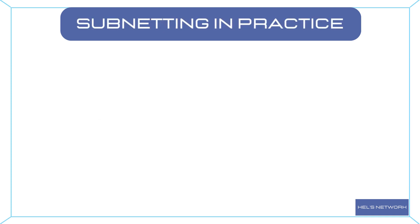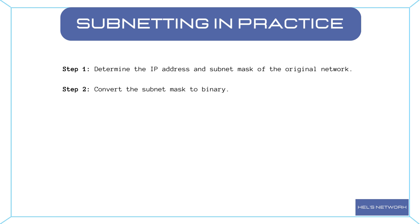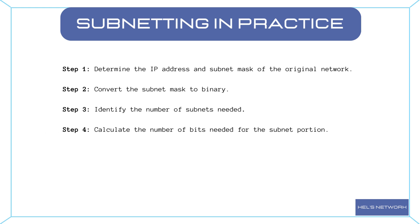Let's get hands-on with subnetting. To calculate subnets, follow these steps. Step 1: Determine the IP address and subnet mask of the original network. Step 2: Convert the subnet mask to binary. Step 3: Identify the number of subnets needed. Step 4: Calculate the number of bits needed for the subnet portion. Step 5: Create the new subnet masks for each subnet.